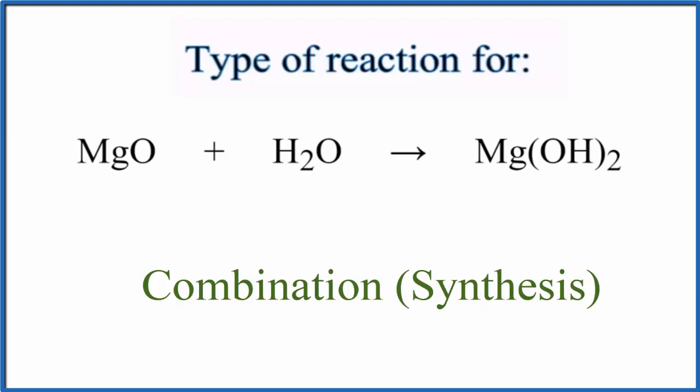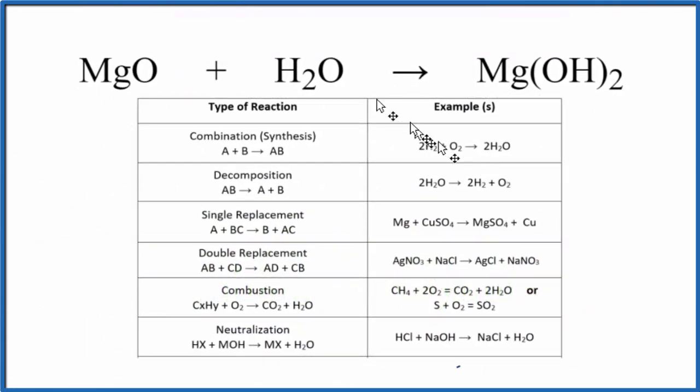If we look at this table of common types of chemical reactions, here is the combination or the synthesis. It's also called a synthesis reaction. The general format is A plus B gives us AB.